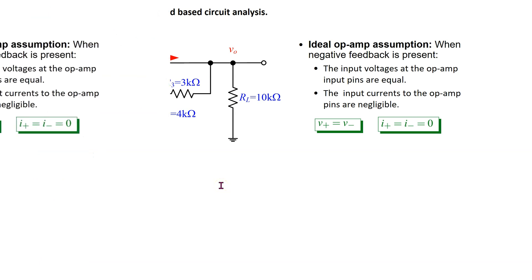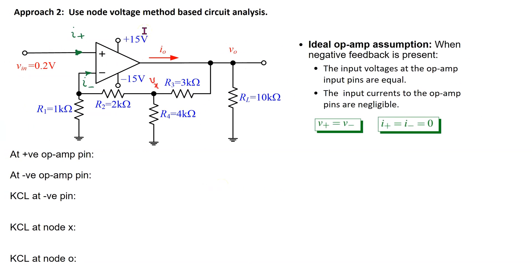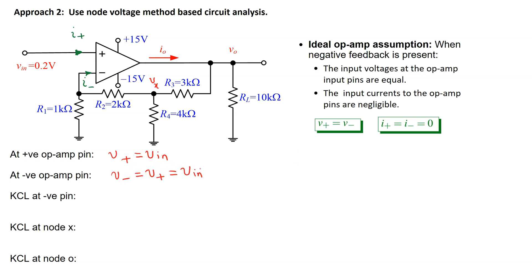Let us look at Approach 2. Under this approach, we simply apply the ideal op-amp assumption and solve the circuit directly using the node voltage method. At the positive pin, V plus equals V in. At the negative pin, using the ideal op-amp assumption, V minus equals V plus equals V in. Thus, the voltage at that node is V in. We need to write Kirchhoff's current law at three nodes.